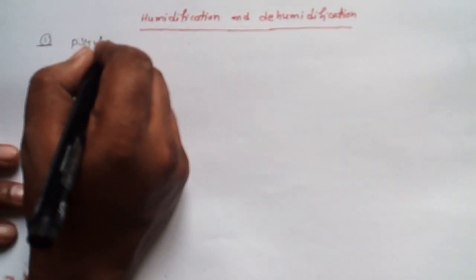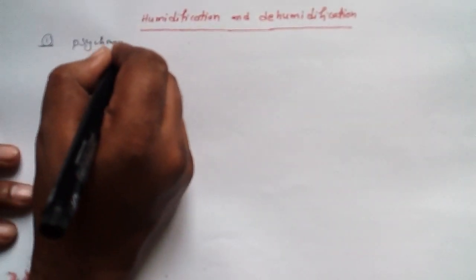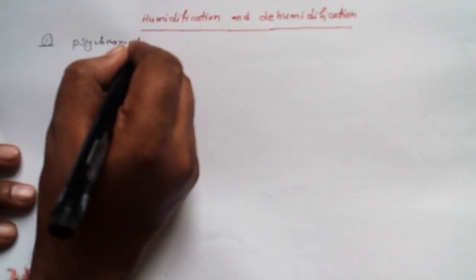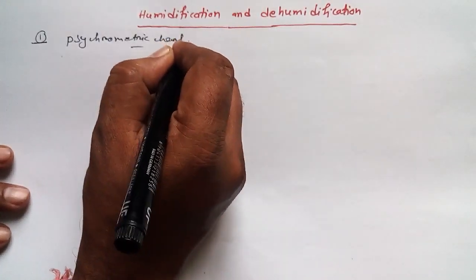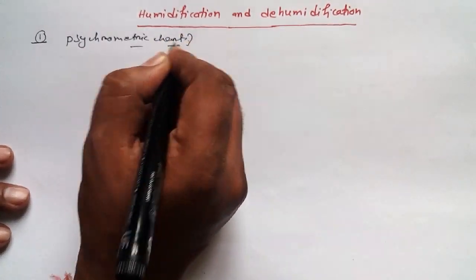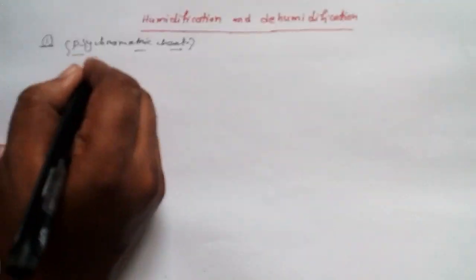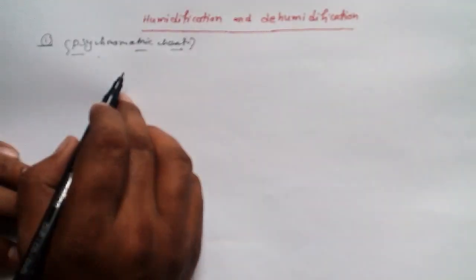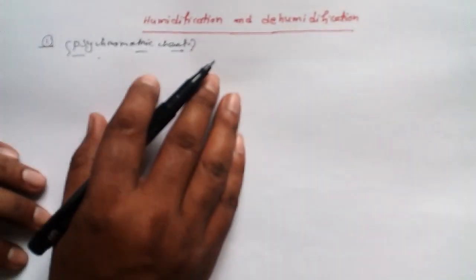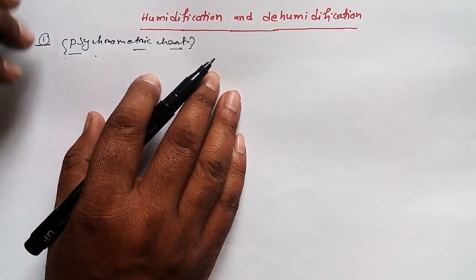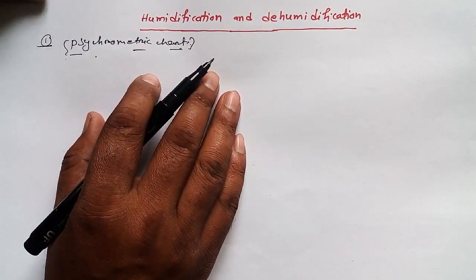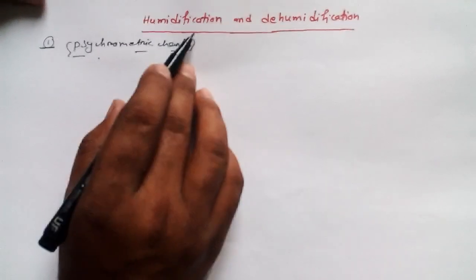I'm going to get help from the psychrometric chart because this chart is going to help me understand these concepts. So let's move to the chart. Basically, what is dehumidification?